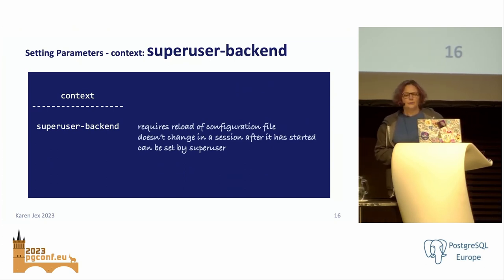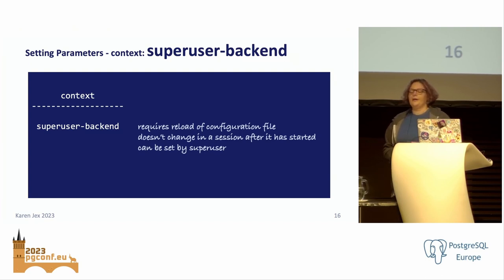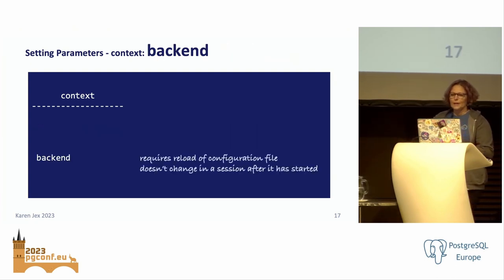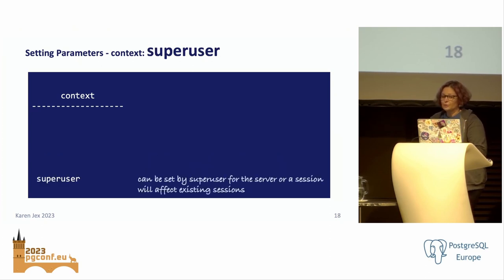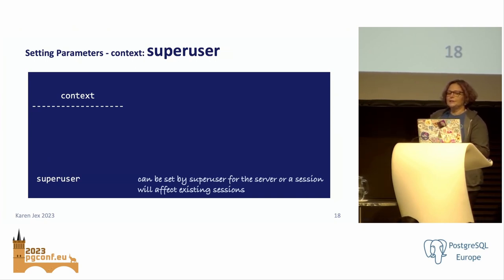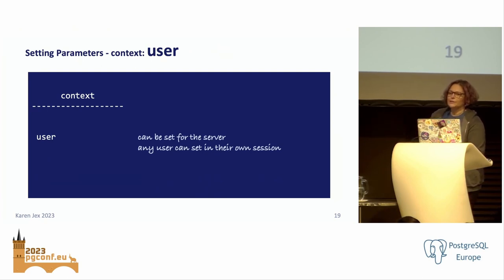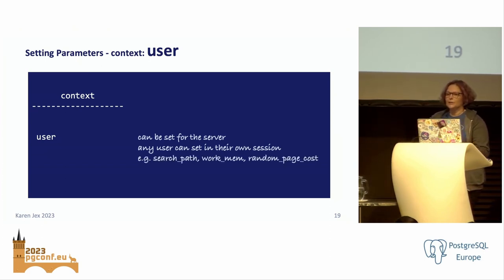There are superuser-backend parameters that can be changed in postgresql.conf or set by a superuser for their own session at connection time — changes won't affect currently running sessions. Backend parameters are the same but any user can set them. Superuser parameters can be set in postgresql.conf or within a session by a superuser, and changes will affect existing sessions. Finally, the user context is the same as superuser, but any user can change their own session-local value — this includes parameters like search_path, work_mem, and query tuning parameters such as random_page_cost.